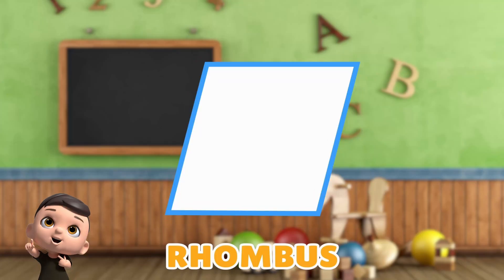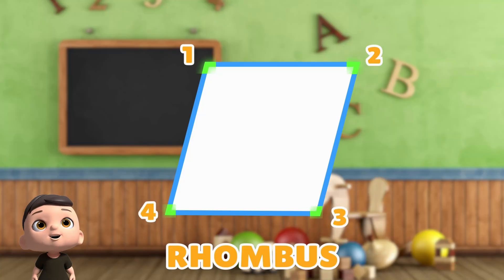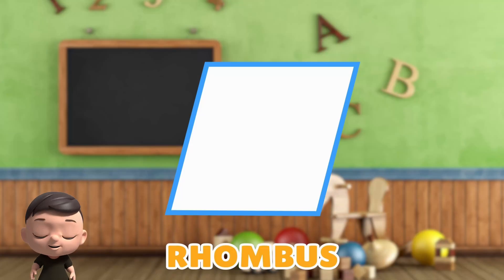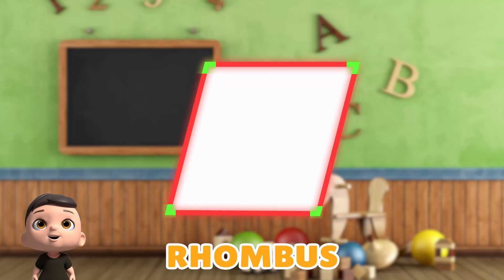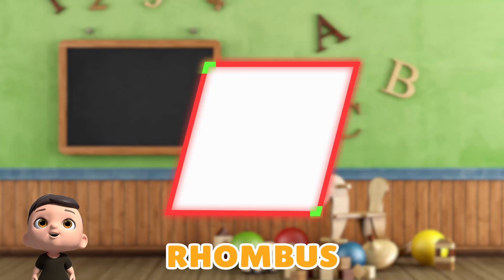Now let's count the vertices of a rhombus. 1, 2, 3, 4. Rhombus has 4 vertices. So we can say that a rhombus has 4 sides and 4 vertices. A rhombus is a shape with all sides equal in length and opposite angles equal.